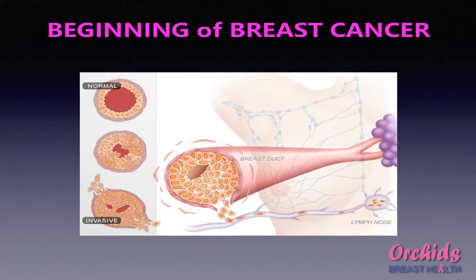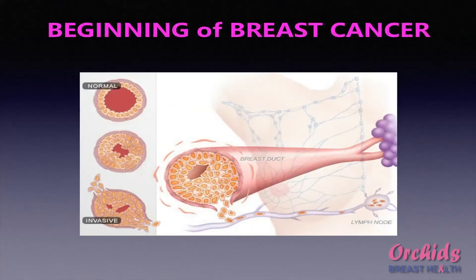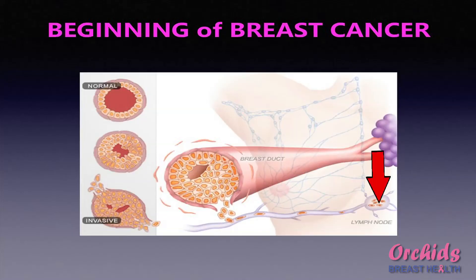Once the cells break through the wall of the ducts, they invade the blood vessels or the lymphatic tissues within the breast. From the lymphatic ducts, they may travel into the glands in the axillary region, as described in the anatomy.